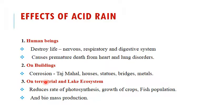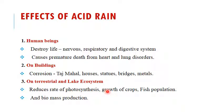The next effect is on the Terrestrial and Lake Ecosystem. Terrestrial means related to land, and Lake Ecosystem means related to water. Acid Rain causes effects on both. The first point is it reduces the rate of photosynthesis, which is essential for all aquatic and terrestrial plants. As photosynthesis decreases, fish, crab, and other populations get reduced. This also reduces the growth of crops, fish population, and overall biomass production.